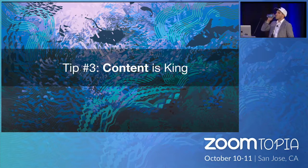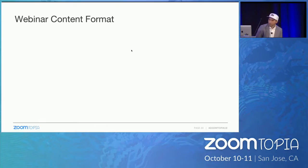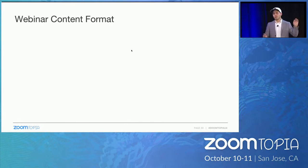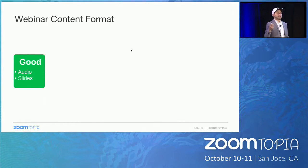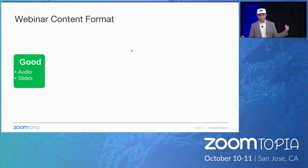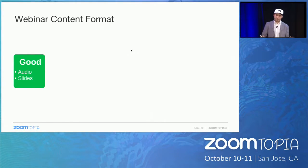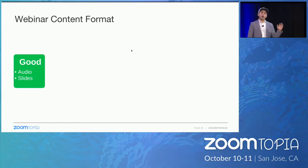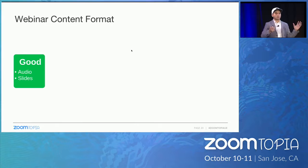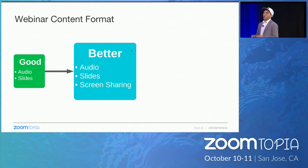Tip number three: content is king. What does that mean? You first need to think about webinar content format. It's 2018, and most webinars still look like just audio and slides — that's not bad, but there's room for improvement. We have way better technology now. A step up from there is what I call the 'better' category: audio, slides, and screen sharing. More engagement, more interaction.